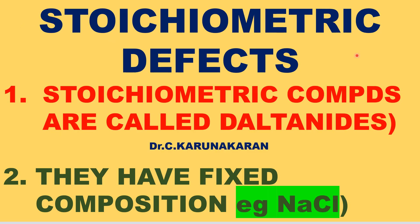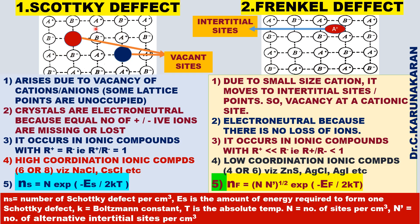What are stoichiometric defects? Stoichiometric compounds are also called daltonites. They have fixed or constant composition. For example, NaCl has a 1:1 ratio, and calcium chloride has a 1:2 ratio — a fixed composition. Whereas non-stoichiometric compounds do not have fixed composition. There are two types of stoichiometric defects: one is called Schottky defect and another is called Frenkel defect.